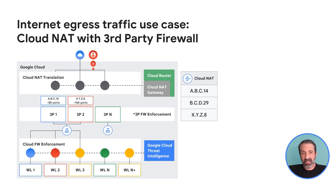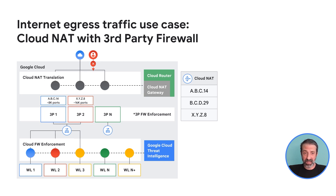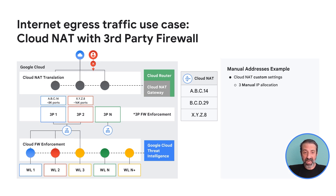Let's take a look at a more complex example. In this case, the egress public IPs used by Cloud NAT need to be known and static, so I have to configure manual IP allocation rather than automatic. This allows you to administratively define a set pool of static IP addresses that Cloud NAT can use. However, by definition, this is less dynamic as the number of IPs available is fixed and finite. Based on the ports per VM allocated, using manual IPs sets a limit on the number of third-party firewalls a Cloud NAT gateway can support before running into port exhaustion. In this example, we have configured three manual IPs, enabled DPA, and set the minimum ports to 4,000 and the maximum ports to 16,000.